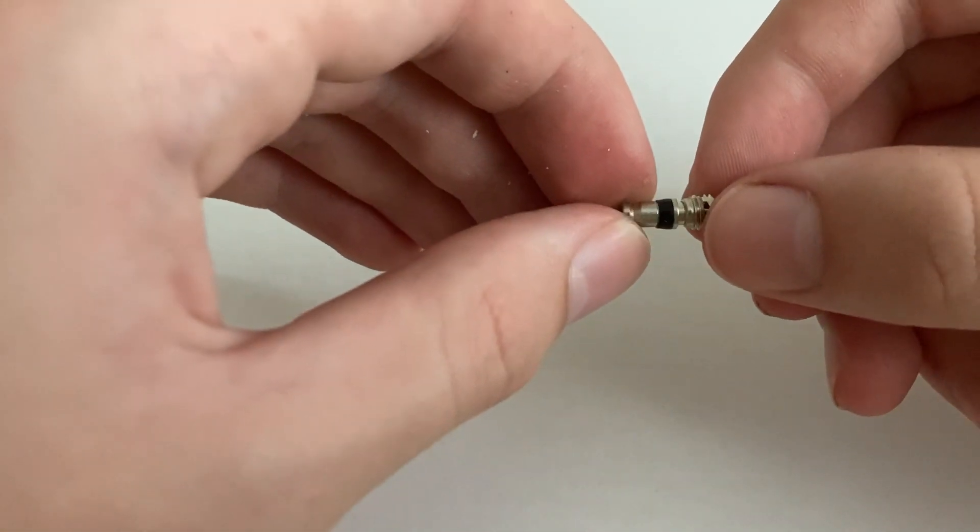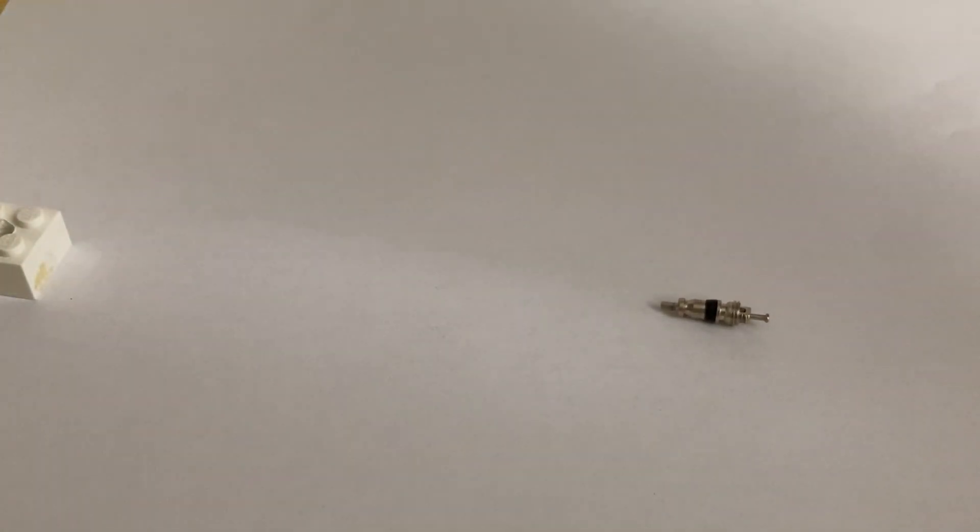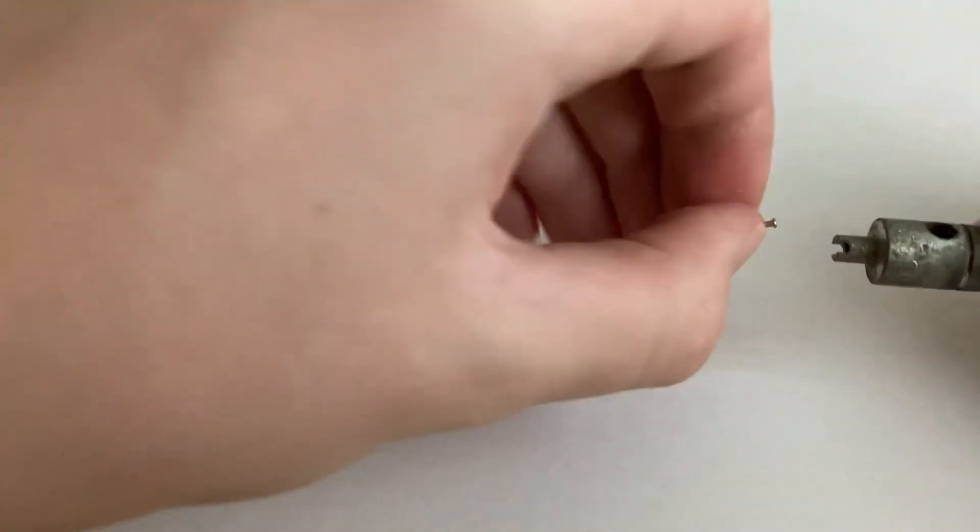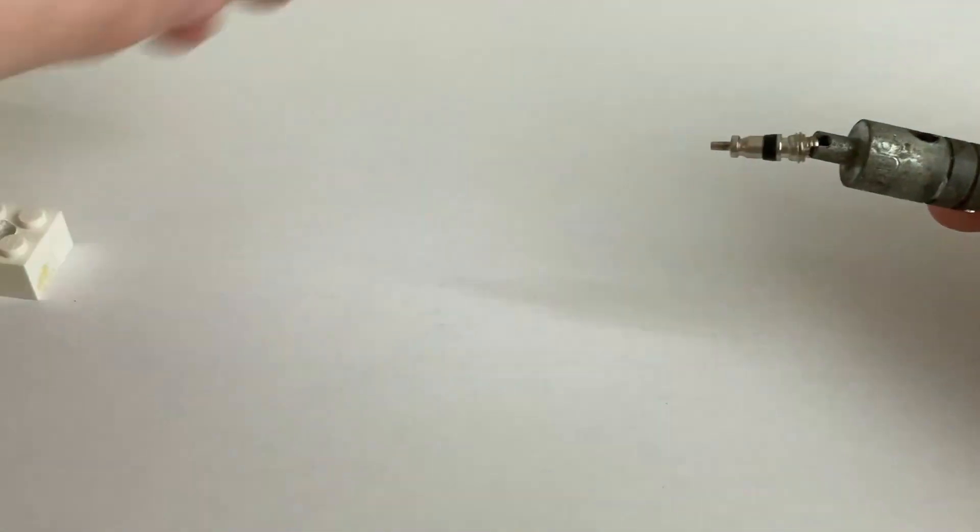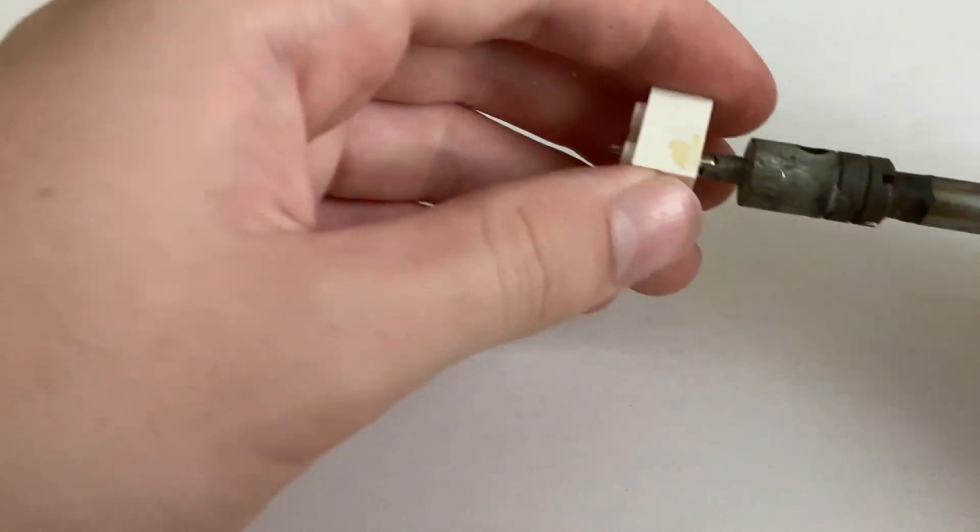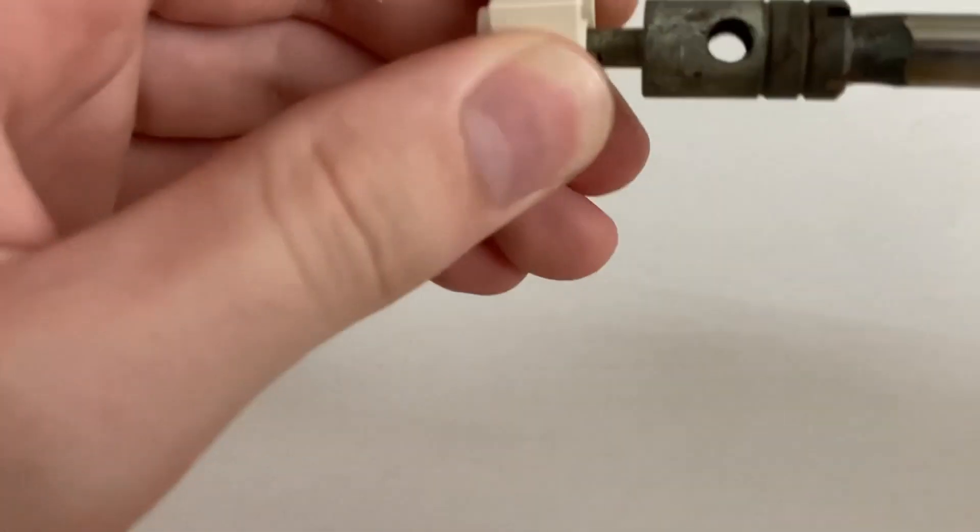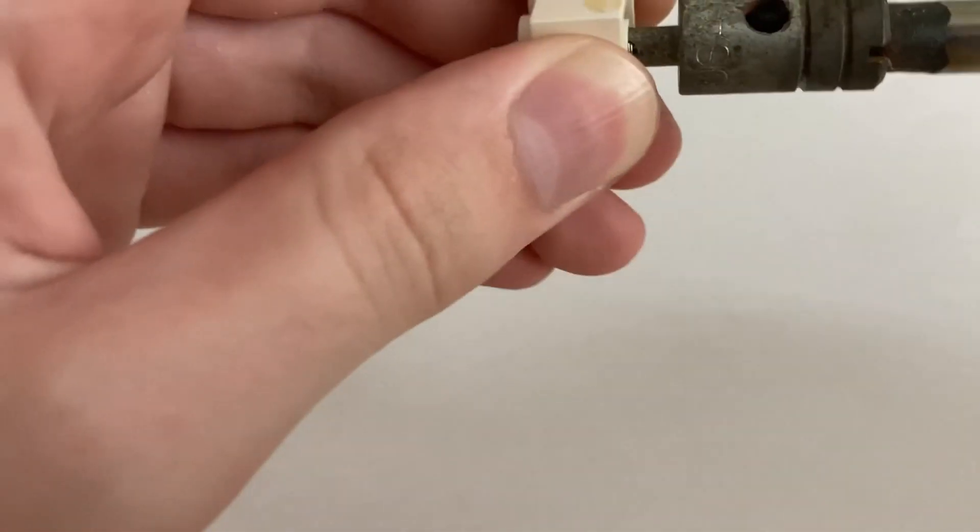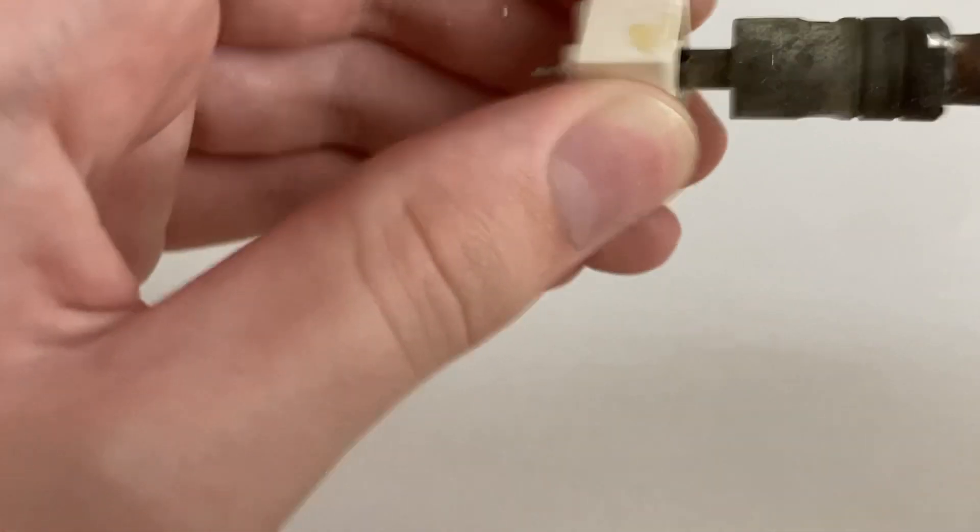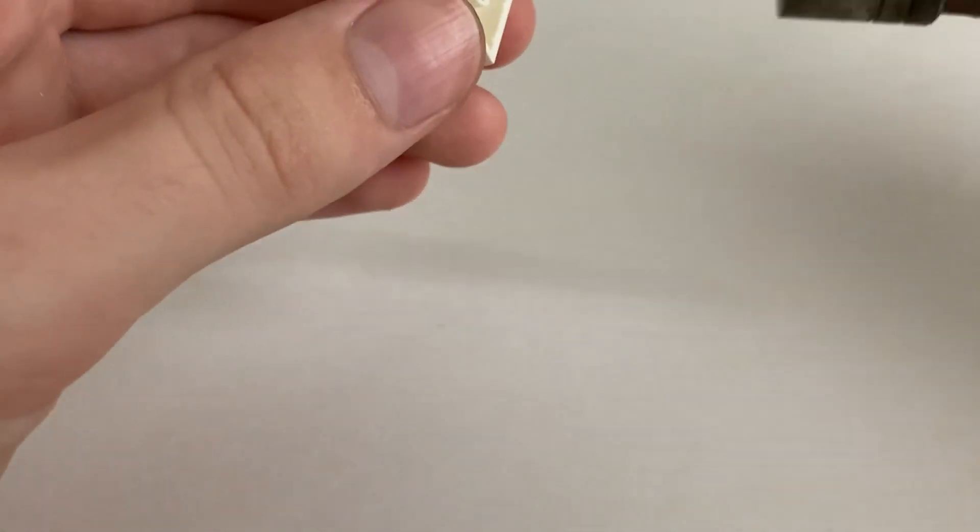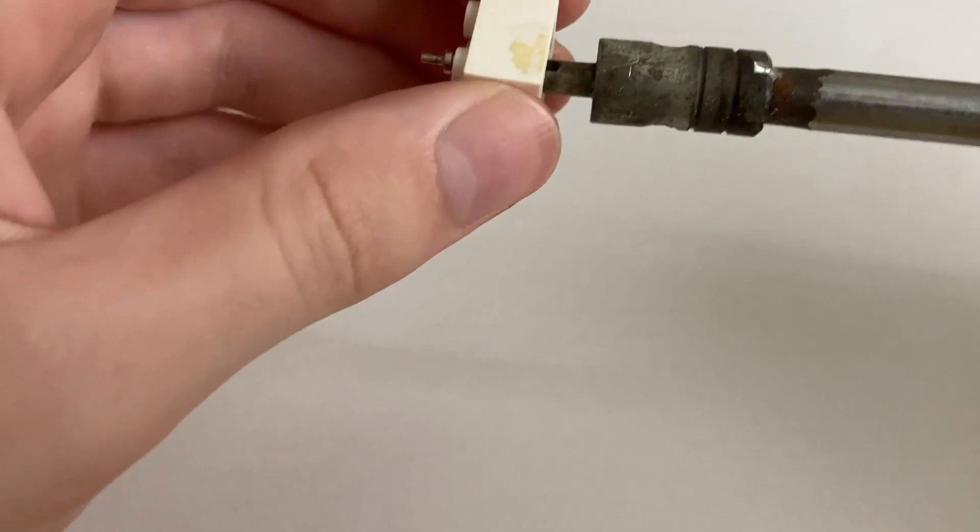Next you want to take the tire core valve and then some sort of bit for the tire core valve like that, and then you want to tighten it so that it's completely flush with the bottom of the brick. And then you want to tighten it one more full turn.